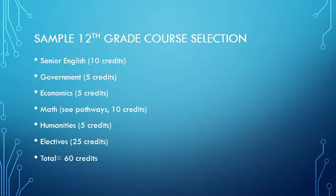You'll want to meet those Humanities requirements if you haven't yet for 5 credits. Electives will make up the last 25 credits of your requirements, equaling 60 credits for your Senior year.